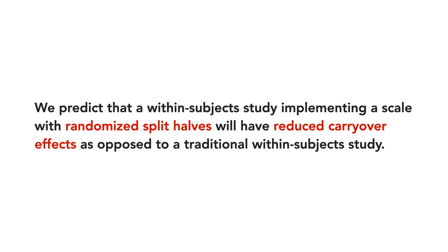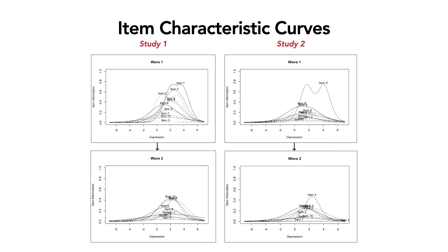We predict that a within-subject study implementing a scale with randomized split halves will have reduced carryover effects, as opposed to a traditional within-subject study where everyone sees the same items at each administration. Looking at the item characteristic curves — study one is on the left, that's the traditional one. In the second administrations, the curves go down, indicating they are less reliable. In study two, we see the same trend. However, the numbers paint a clearer picture than just these graphics.